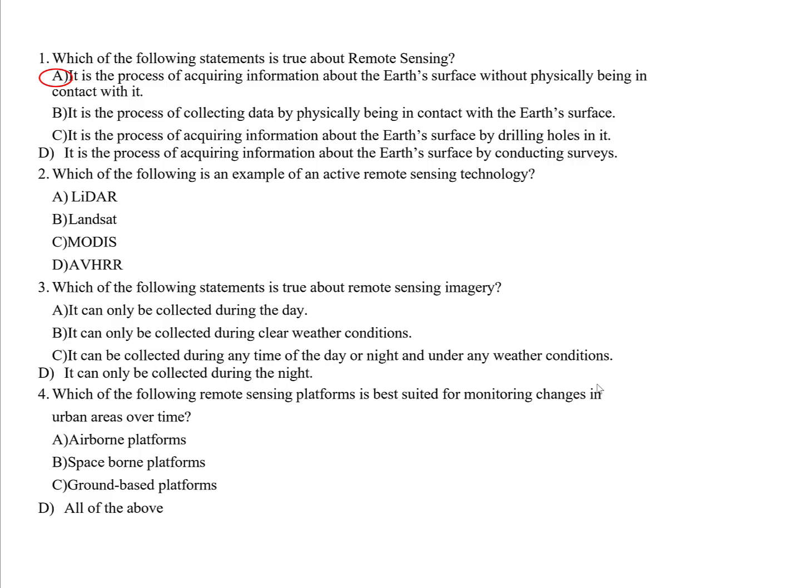Question two: Which of the following is an example of an active remote sensing technology? In remote sensing, there are two types: active and passive. Passive remote sensing — including Landsat and similar technologies — uses external energy sources like sunlight. Active remote sensing includes radar and LiDAR, which have their own energy source. The correct answer is LiDAR technology.